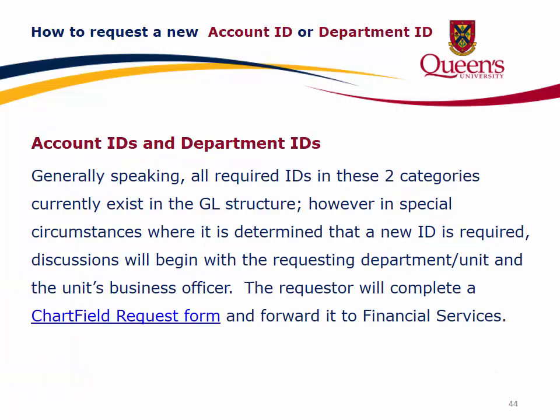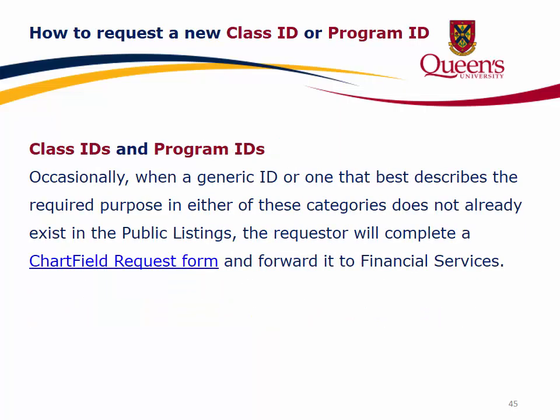How to request a new Account ID or Department ID: generally, all required IDs in these two categories currently exist in the GL structure. However, in special circumstances where a new ID is required, discussions will begin with the requesting department or unit and the unit's business officer. The requester will complete a chartfield request form and forward it to Financial Services. For a new Class ID or Program ID, when a suitable generic ID does not exist in the public listings, the requester completes a chartfield request form and forwards it to Financial Services.